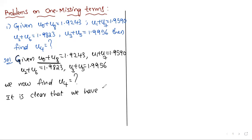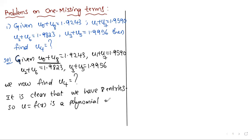We have 8 entries. Since u is equal to f of x, which is a polynomial of degree n minus 1, with 8 entries the degree is equal to n minus 1, which is equal to 7. So f(x) is a polynomial of degree 7.